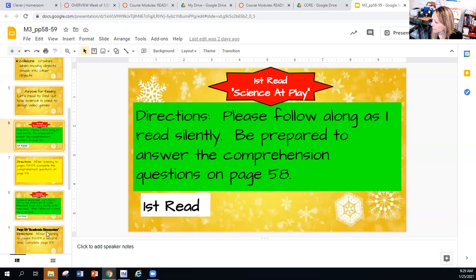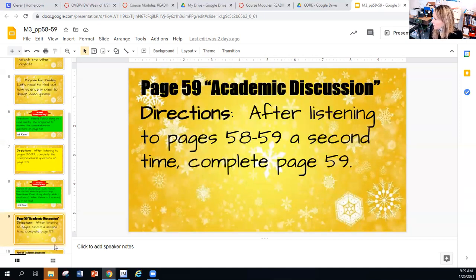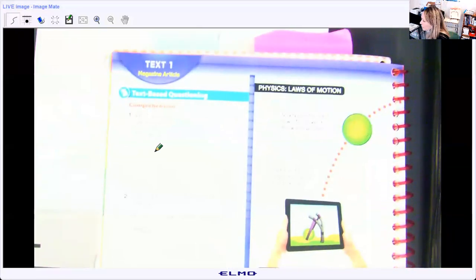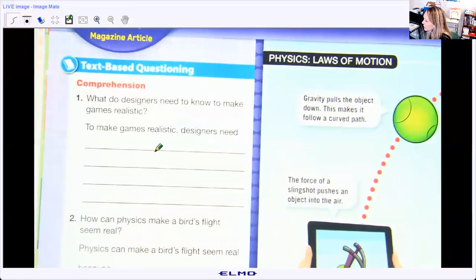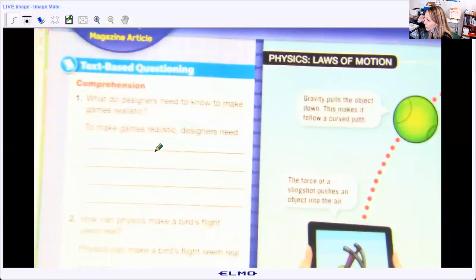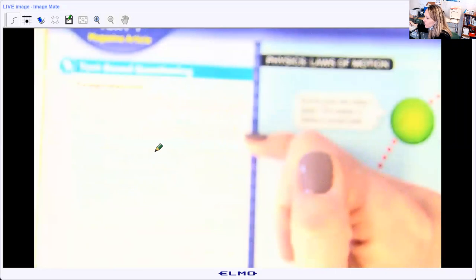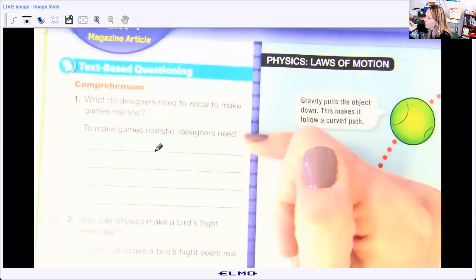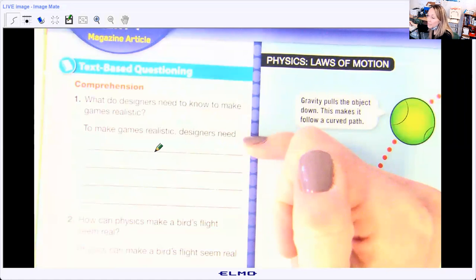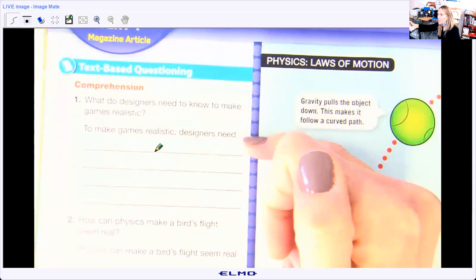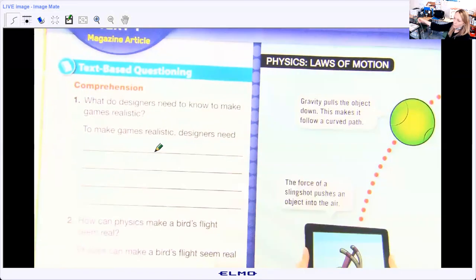Now the questions on page 58 to 59. Let me get my Elmo and go over those. So what do designers need to know to make games realistic? You have your sentence frame here. You just need to finish it. To make games realistic, designers need to finish that statement with text evidence with punctuation.